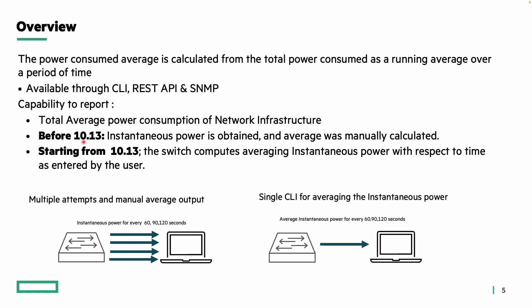Before 10-13, the instantaneous power was obtained and the average had to be manually calculated every time someone needed this data. Starting from 10-13, the system now automatically calculates the average instantaneous power data considering the time specified by the user. This makes it easier to understand and track power usage changes over time without manual calculations.